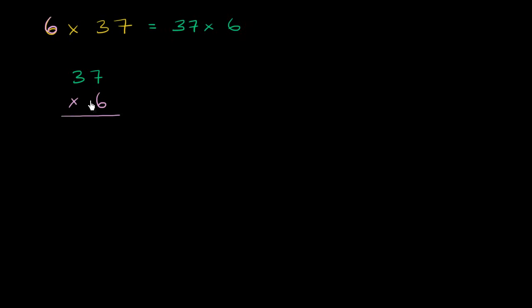Now what we do is we go with the first place in this lower number. There's only one place here. It's only the number 6 right over here. And we're going to multiply that times each of the digits up here. So first, we will start with 6 times 7.